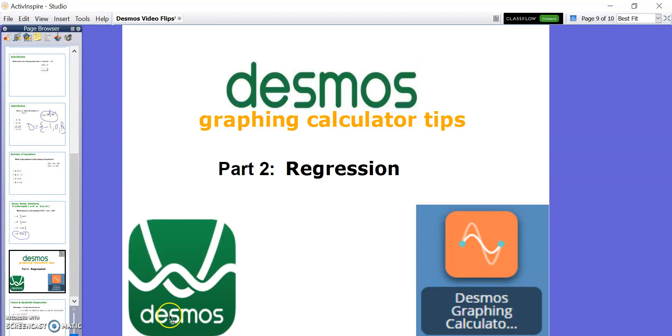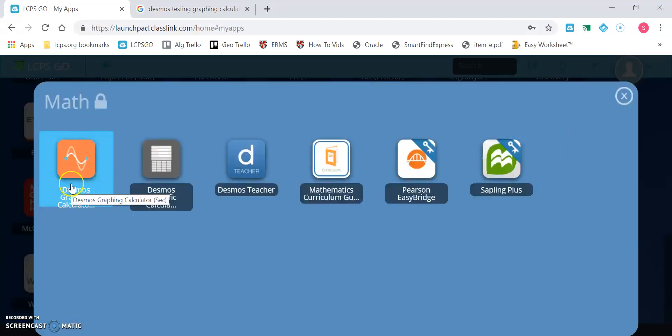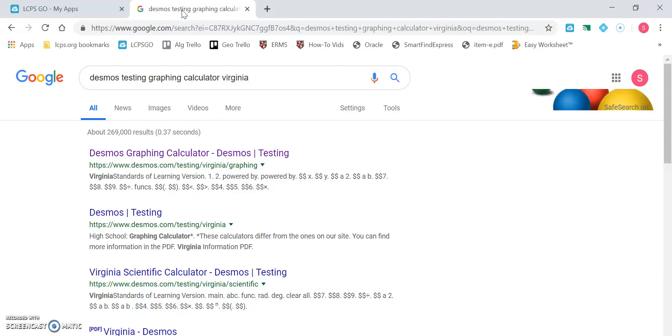Let me remind you how to open the graphing calculator. For students in Loudoun County Public Schools, you're going to log into LCPS Go, find the math folder, and click the button. If you're not in Loudoun County, just type in Desmos testing graphing calculator. I'm using testing specifically for standardized tests, which don't have all functions available. I picked Virginia because some states have different functionality. If you want the regular Desmos graphing calculator, you can just Google that.